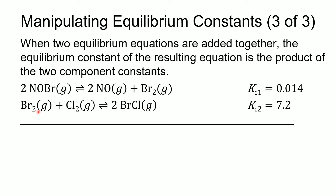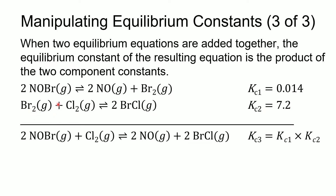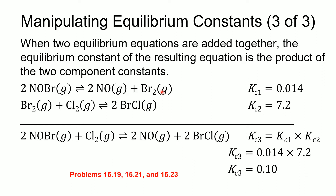If we add these two equations together, the Br2 cancels out, and we get 2NOBr plus Cl2 in equilibrium with 2NO plus 2BrCl. Since this is the sum of the two equations, we take the product of those two equilibrium constants. So 0.014 times 7.2 gives us 0.10 as the value for our equilibrium constant.